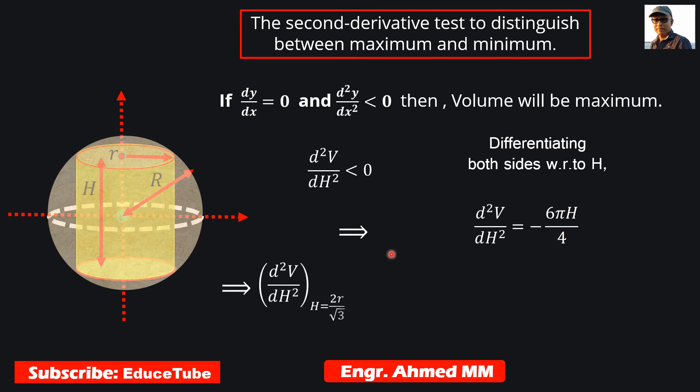Once we get the second derivative, we need to replace H by 2R/√3, the relation we got in previous slides. Now our task is to replace H by this. We replaced it and at the end I found -√3πr, which is negative, so it is less than zero.